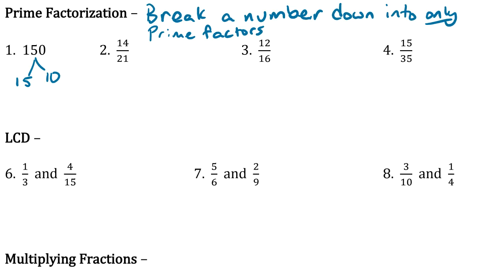Now we look at these and ask: can 15 be broken down any more? Yes — it can be broken down into 3 and 5. Can 3 or 5 be broken down any more? No. So 3 and 5 are going to be two of our factors at the end. Now let's take a look at the 10. 10 can be broken down into 2 and 5. Can 2 or 5 be broken down any more? No. So we stop at those.